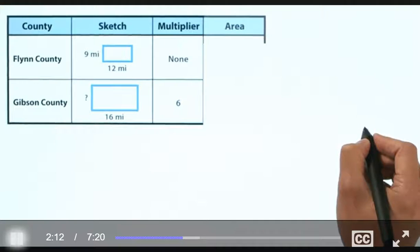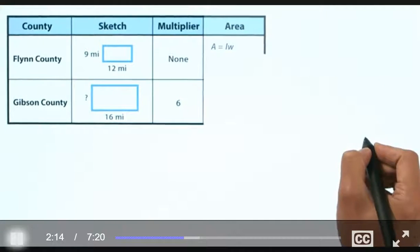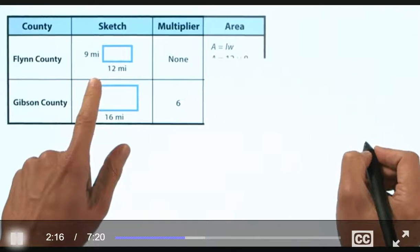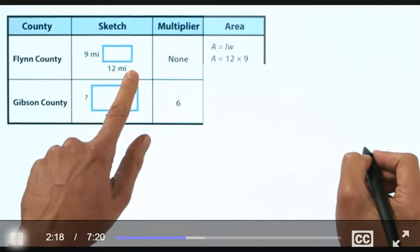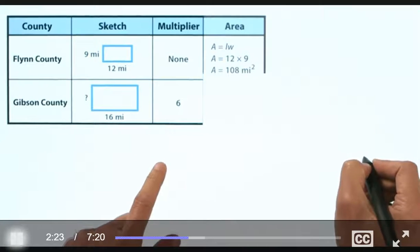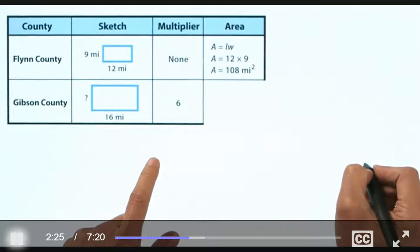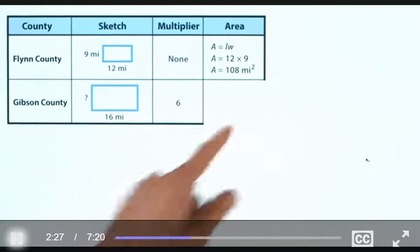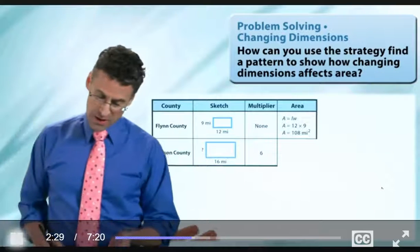To find the area, all we do is we know that area equals length times width. And so, what's the length? Well, the length is 12, and the width is 9. So, we have 12 times 9, which works out to be, in fact, 108. And the units, of course, are miles squared.